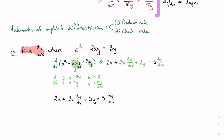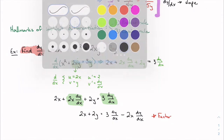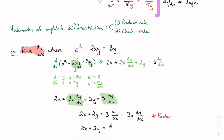Here's a term with dy/dx and here's another, so let's collect those: 2x plus 2y equals 3 dy/dx minus 2x dy/dx. Now factor out dy/dx to get dy/dx times (3 minus 2x). Dividing both sides, dy/dx equals (2x plus 2y) divided by (3 minus 2x). That's our final answer.